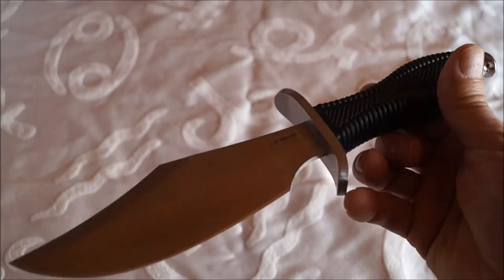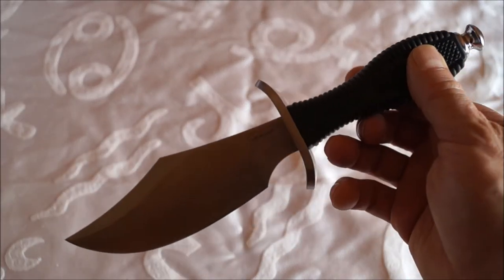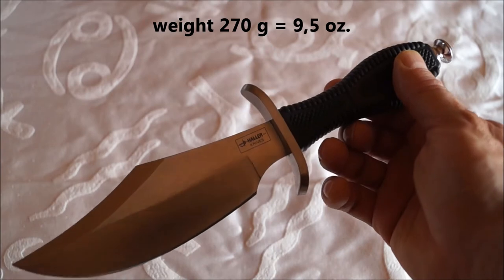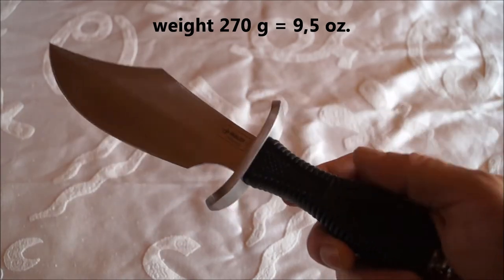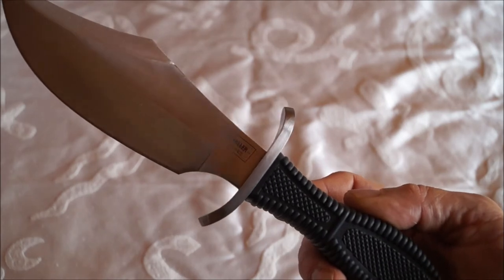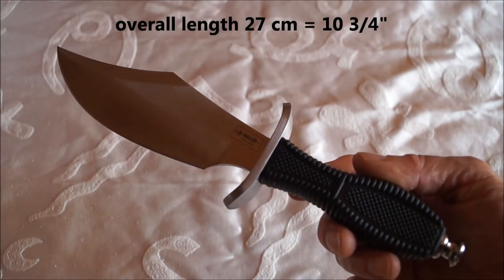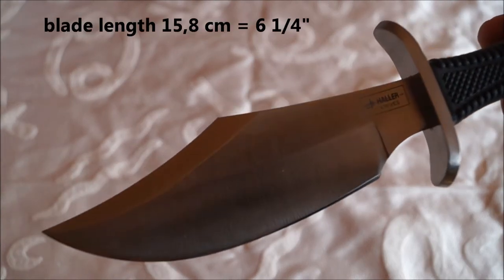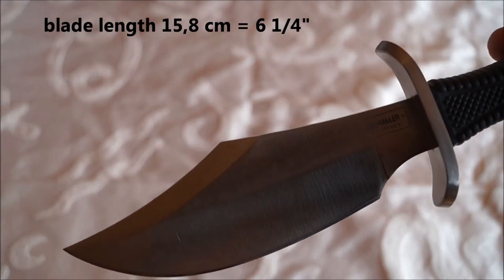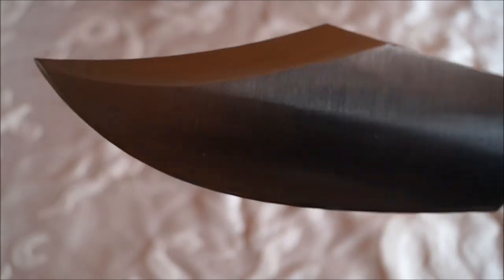Dieses Messer wiegt 270 Gramm und die Scheide dazu 70 Gramm. Gesamtlänge 27,2 cm Klingenlänge 15,8 cm Klingenhöhe an der breitesten Stelle 5 cm Klingenstärke 4 mm.